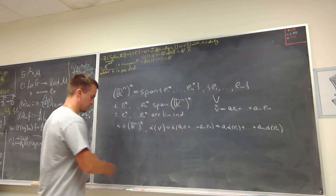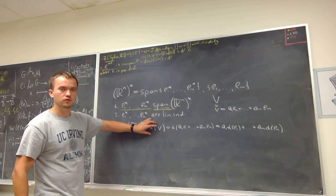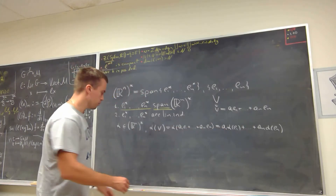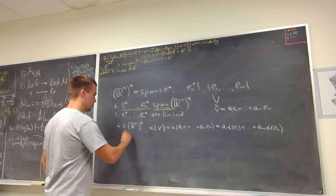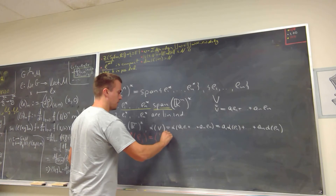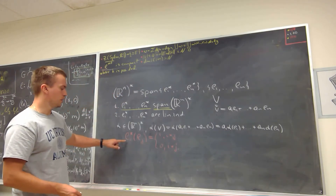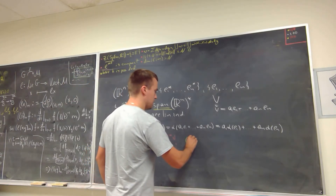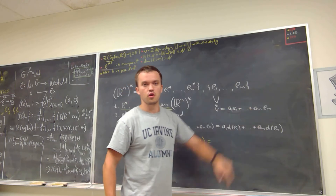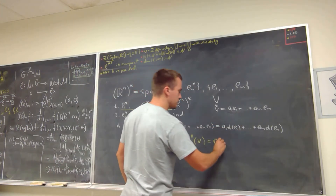To show that these dual vectors span the dual space, we want to write the linear functional as a sum of dual vectors evaluated at v. We recall the definition: ei dual evaluated at ej equals 1 if i equals j, and 0 otherwise. This means that ei* evaluated at v gives the coefficient ai in front of basis vector ei.